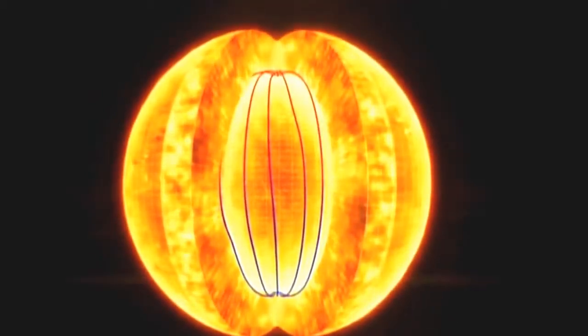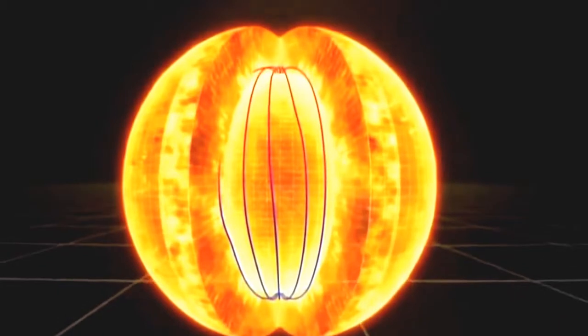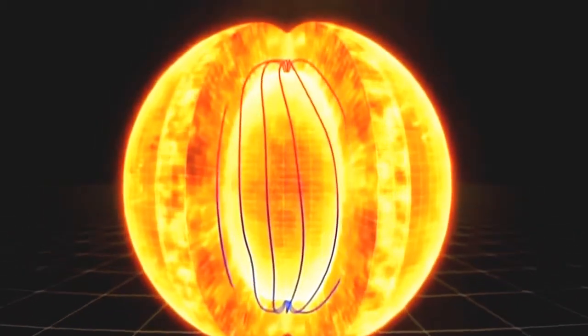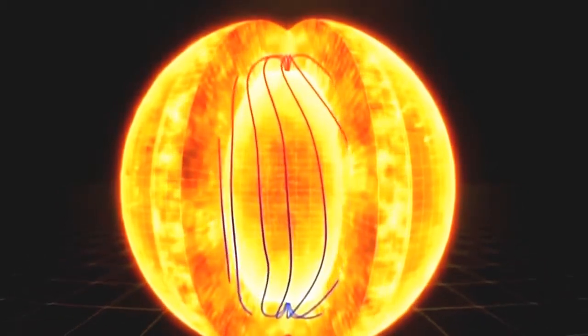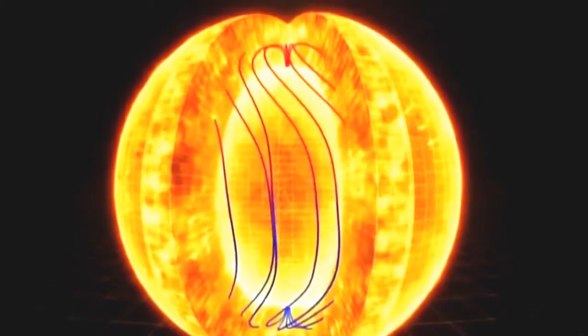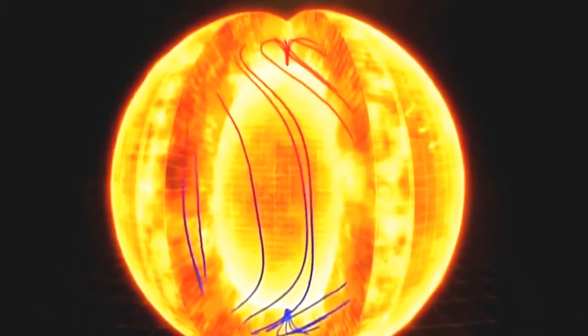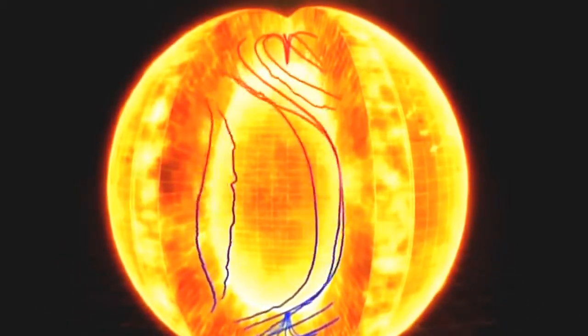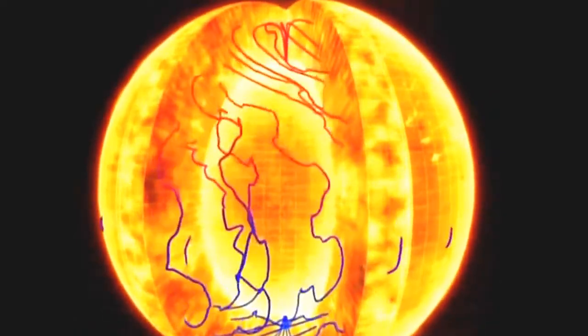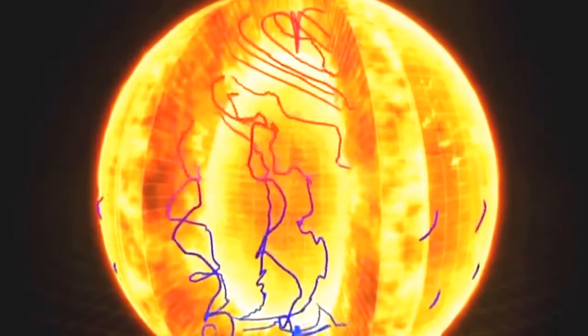The clue lies deep within the convection zone. Magnetic field lines normally run from pole to pole. But with all the turmoil in the convection zone, that pattern can't last. Rotating layers stretch them horizontally. Convection twists and braids them. Under immense strain, they begin to kink upwards towards the surface.